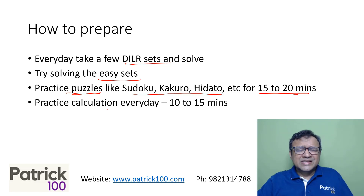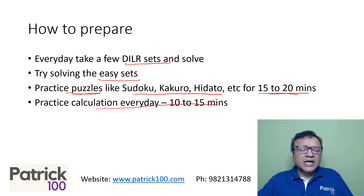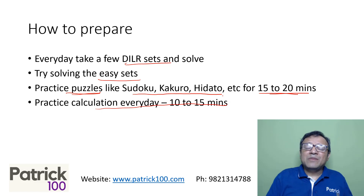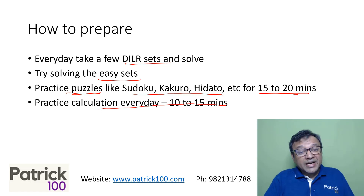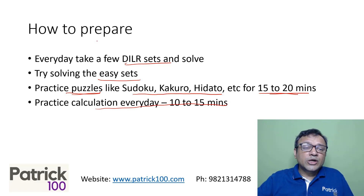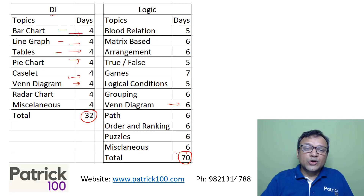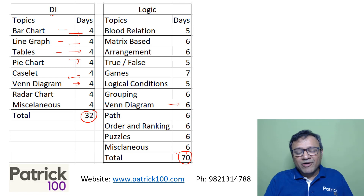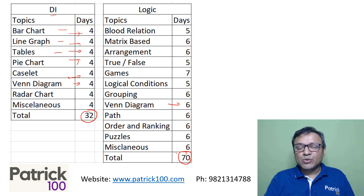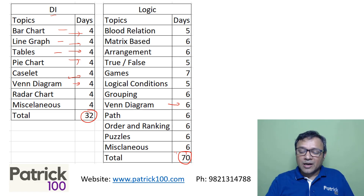Also, do calculations — the same calculations you do for mathematics. 10 to 15 minutes of calculation will help you for both mathematics as well as the DLR section. You can follow the schedule mentioned here in terms of days required. Every day, just pick up a few sets and practice. That's the best way to improve your DLR.